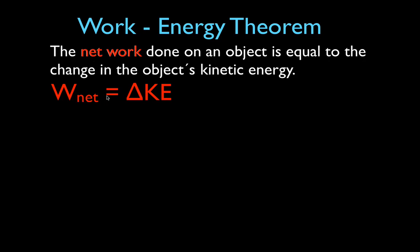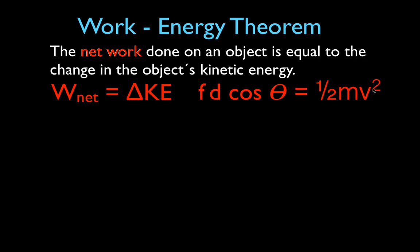So if the net work is equal to the change in kinetic energy, you need to keep in mind that Fd cosine theta — which is the equation for work — is equal to the change in kinetic energy: mv squared final minus mv squared initial.